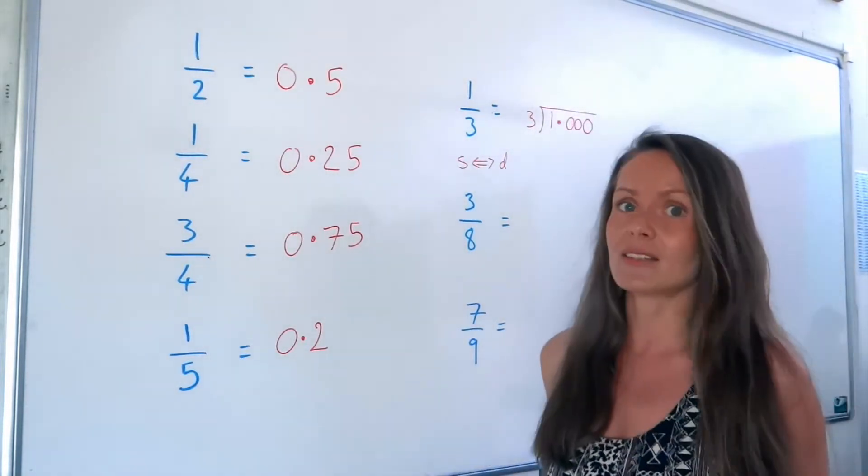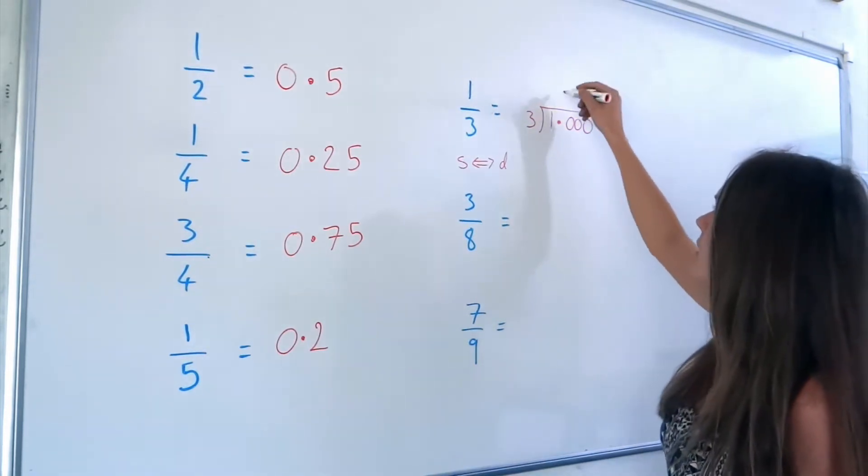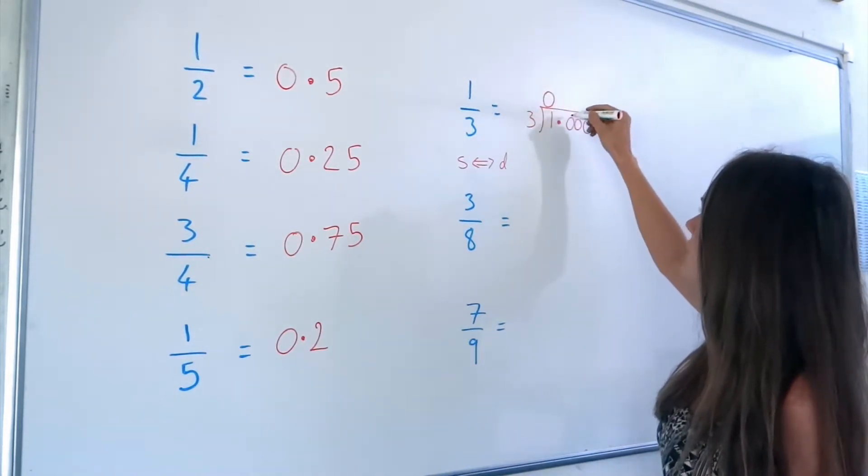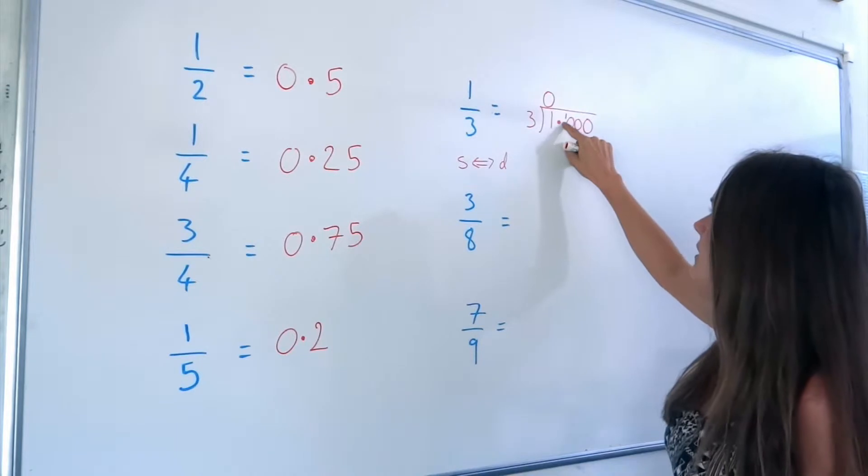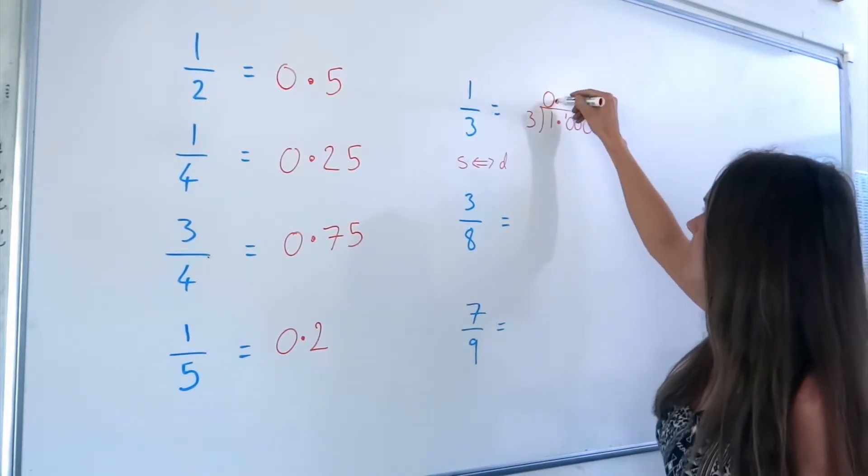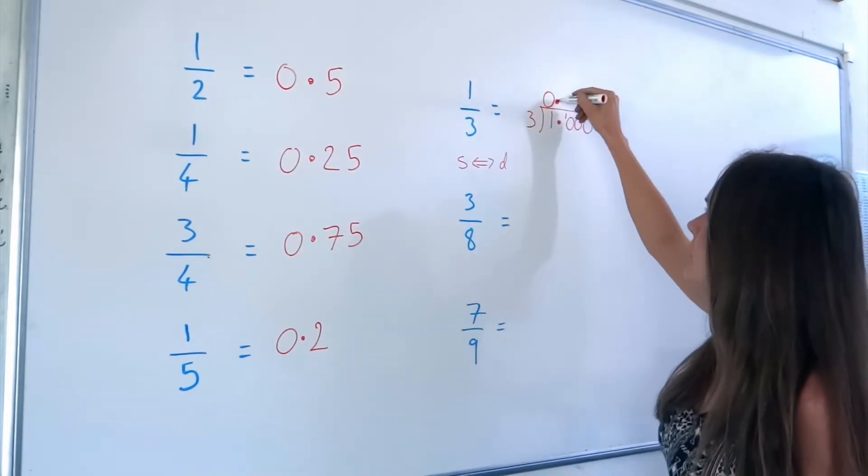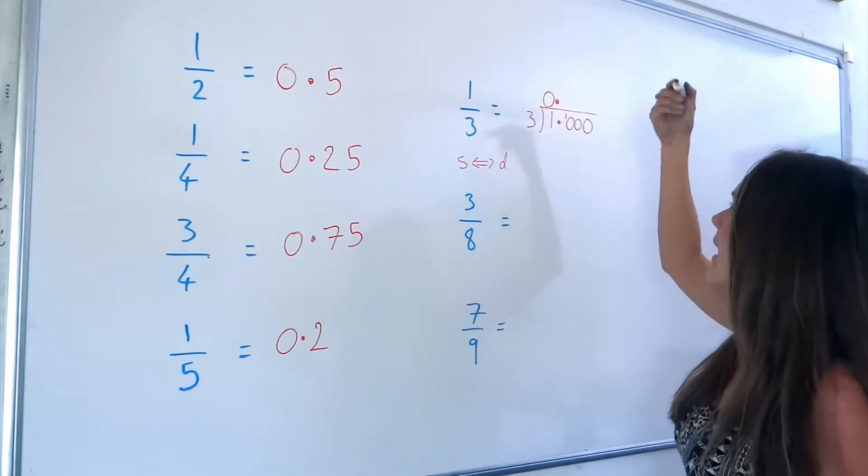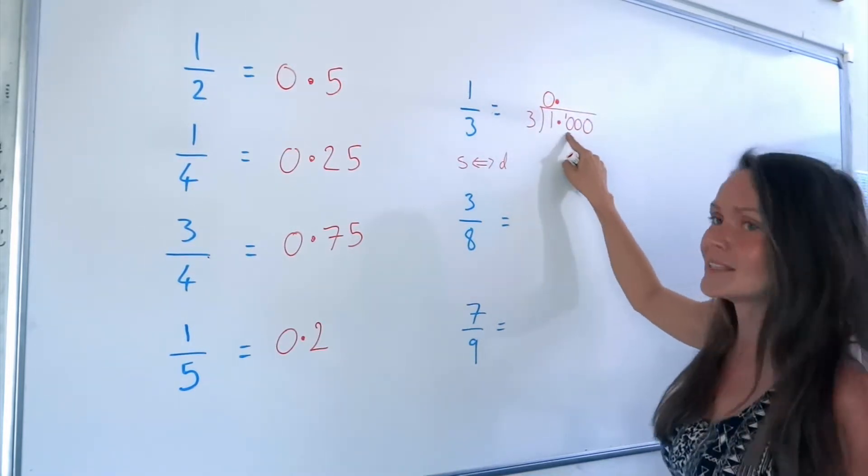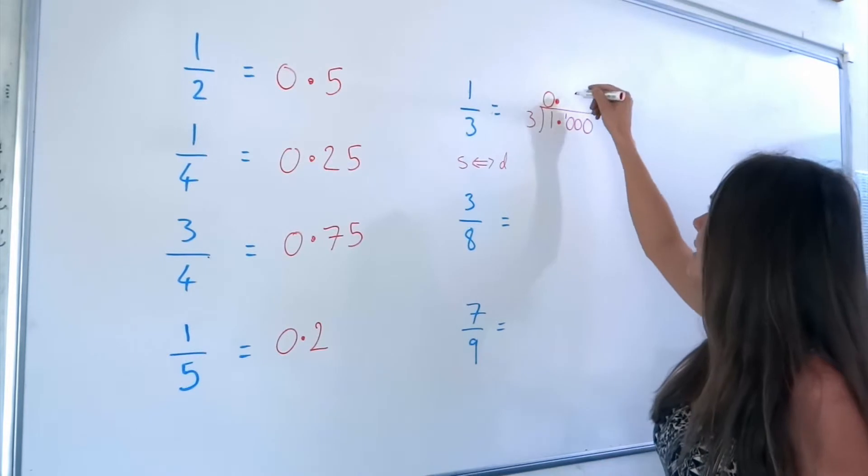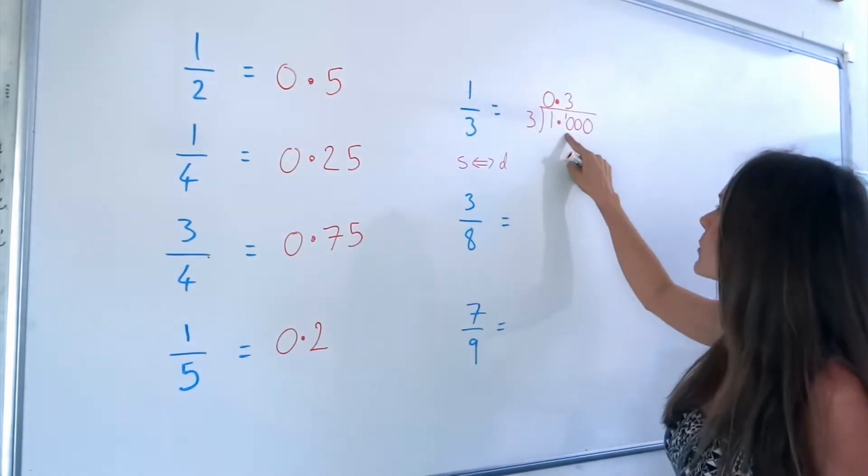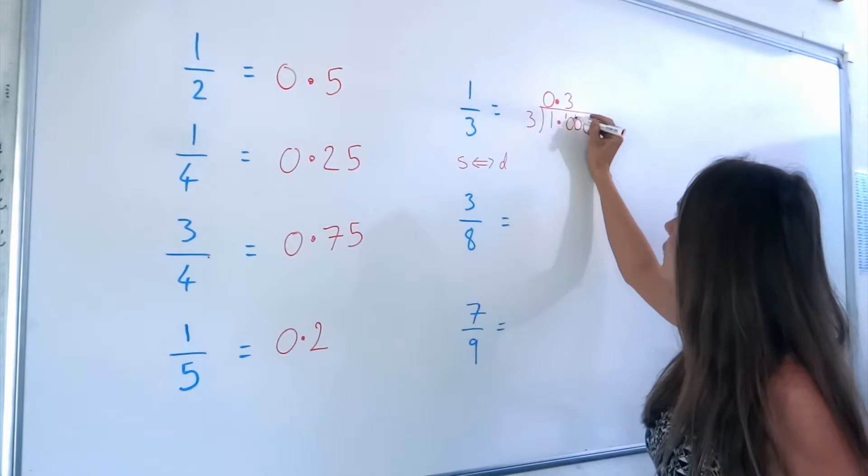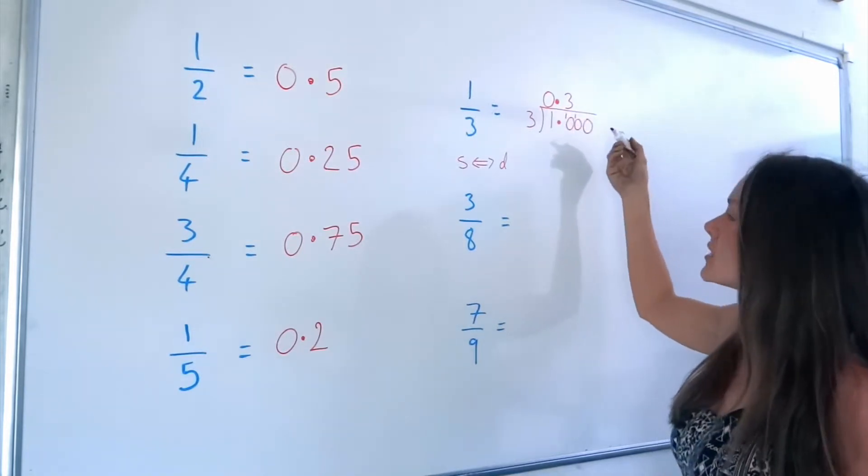So now let's divide. How many 3's fit into 1? Well, none. And there's a remainder of 1, so that 1 carries over to here. Don't forget to put your decimal above that decimal in your answer. And now, how many 3's in 10? Well, there are exactly 3 3's, and 3 3's are 9, but because we've got 10, there's 1 left over.